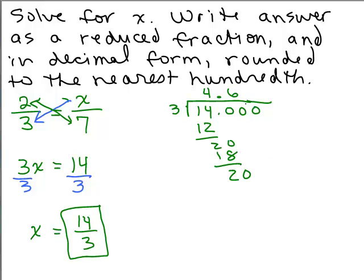And then 3 into 20 goes in 6 times. Bring down the 2. It's going to go in 6 times again. So it's going to go on forever here. So I have a repeating decimal.